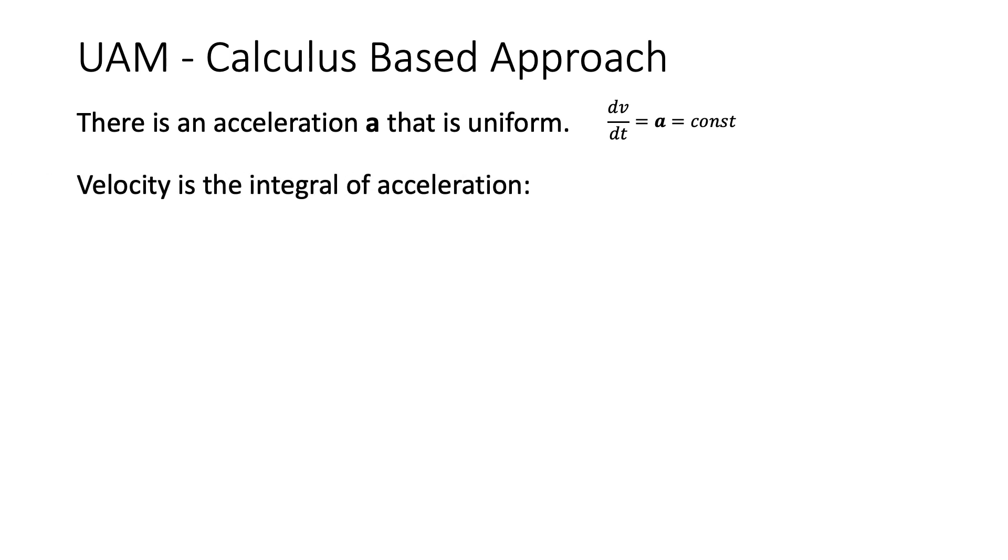Now, velocity is the integral of acceleration. So, take this formula. I've multiplied delta t on both sides. I'm going to integrate both sides. The integral of dv is just v. And A is a constant, so he goes out of the integral. And the integral of dt is t. Now, you should know that when you do an indefinite integral, that you have to add a constant. But here's the trick in physics. What is that constant? Well, that's the initial velocity.